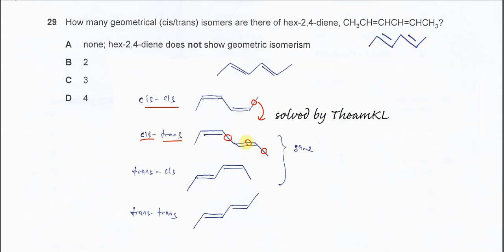We can also make it trans-cis. For the first double bond, the larger groups are now on different sides — so this is a trans configuration. For the second double bond, the two larger groups are on the same side — so this is a cis configuration. Therefore this is a trans-cis isomer.